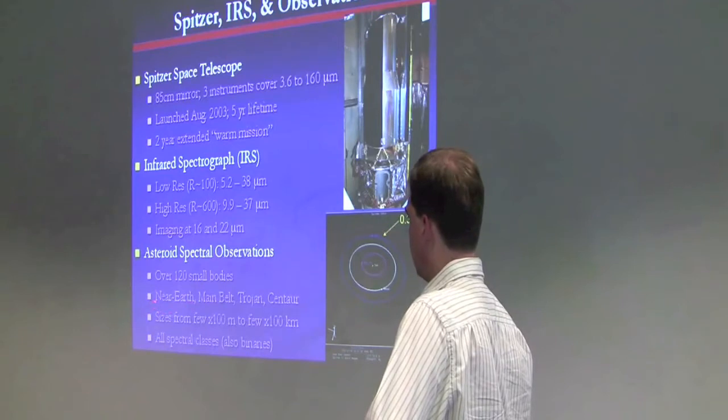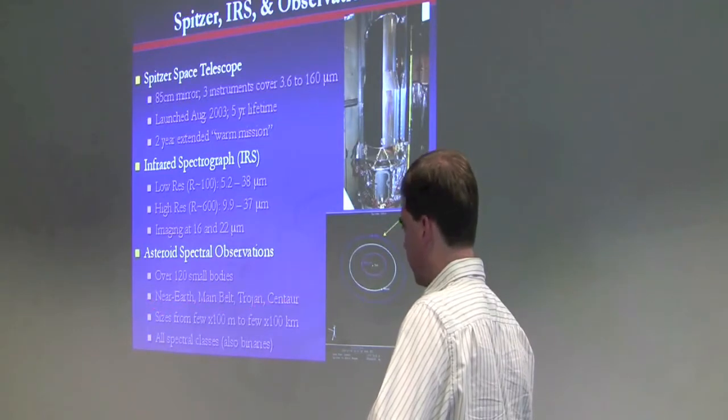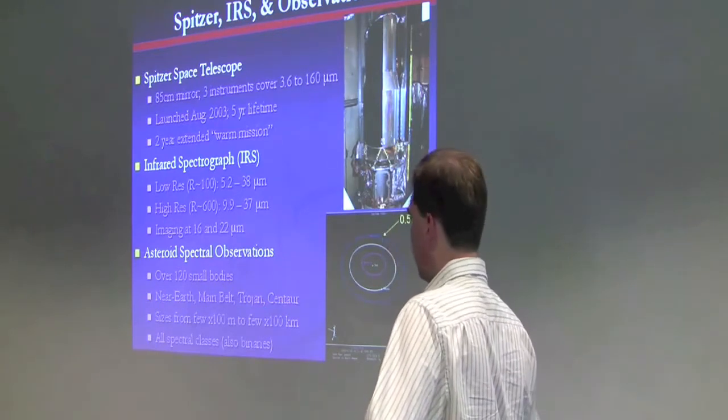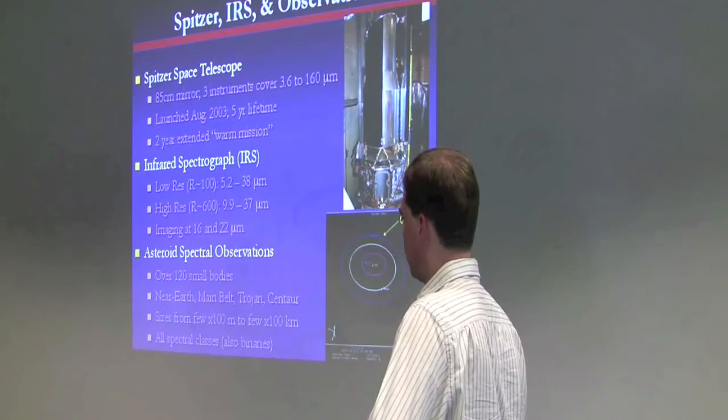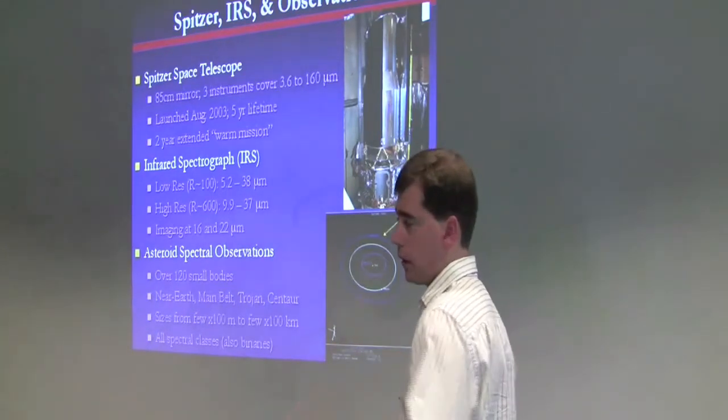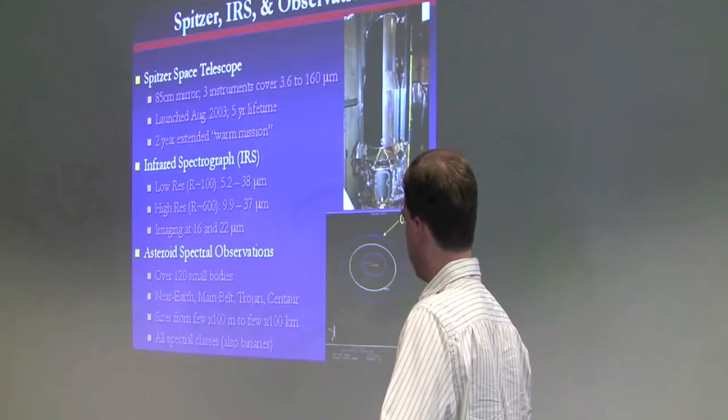These include objects from near Earth space, the main belt, Trojan swarms, centaurs. Sizes range from a few hundred meters to a few hundred kilometers, and it includes all spectral classes, and binaries as well. So it's a broad array of asteroids that have been observed with Spitzer through these various programs.